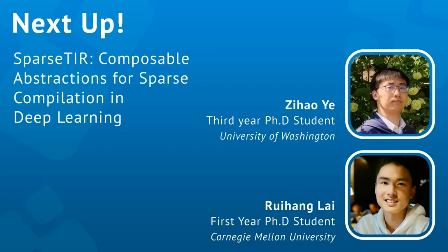Zahao is a second-year PhD student at the University of Washington's Paul G. Allen School of Computer Science and Engineering, advised by Luis Cezé in the Sample Research Group. His research interests include programming languages and architectures for sparsity in deep learning. We also have Ruoheng Lai, a first-year PhD student at the Catalyst Group of Carnegie Mellon University, advised by Tianqi Chen. His research interests lie in the intersection of computer systems and machine learning, especially systems for emerging machine learning workloads.